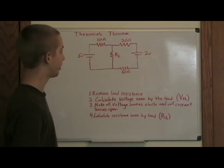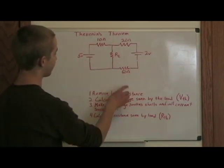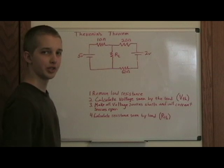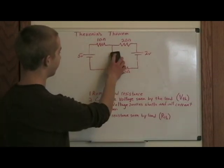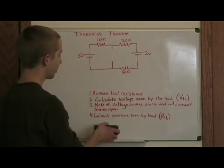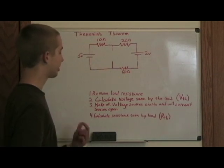And here's another example. And this one, we have two voltage sources and four resistors. So just like the last one, the first step is to remove the load resistor.